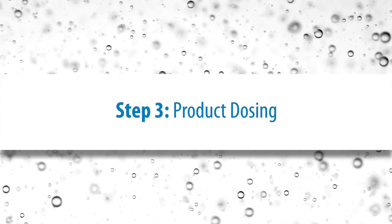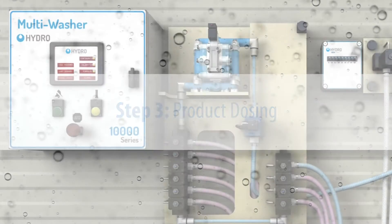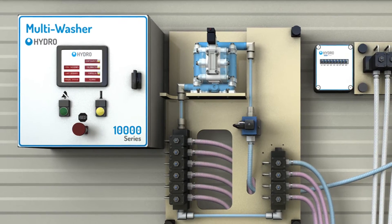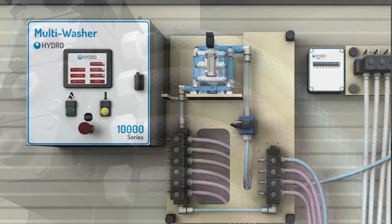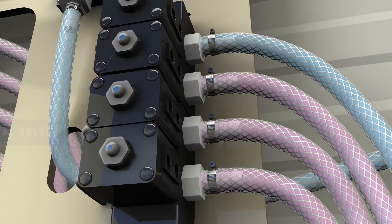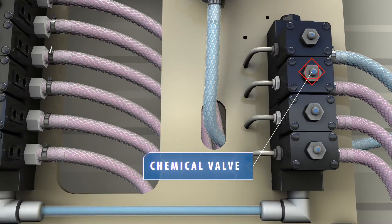Step 3: product dosing. With a successful water test, it is time to send chemical through the dosing channel. The chemical valve is opened at the collector and the pump is activated.